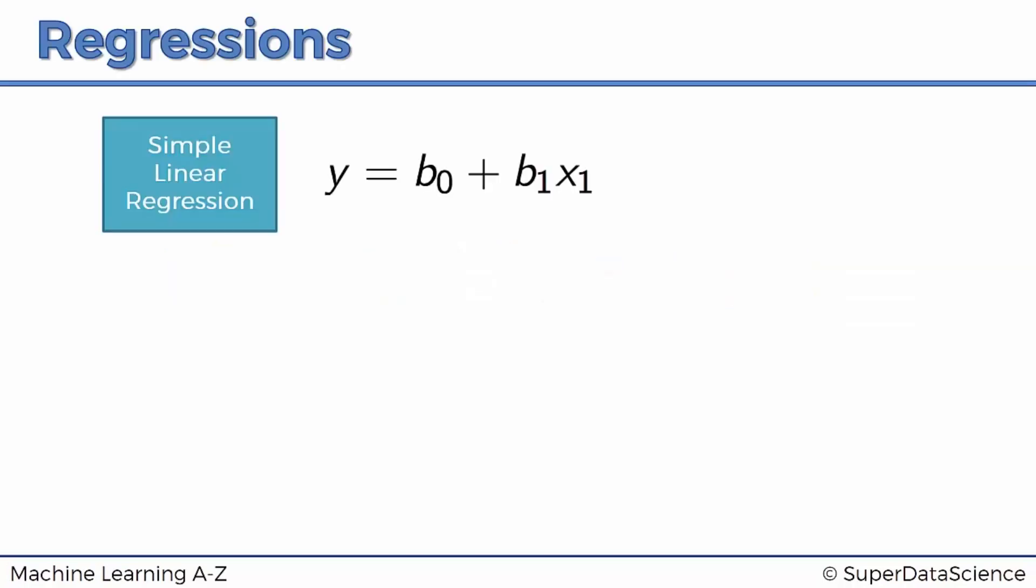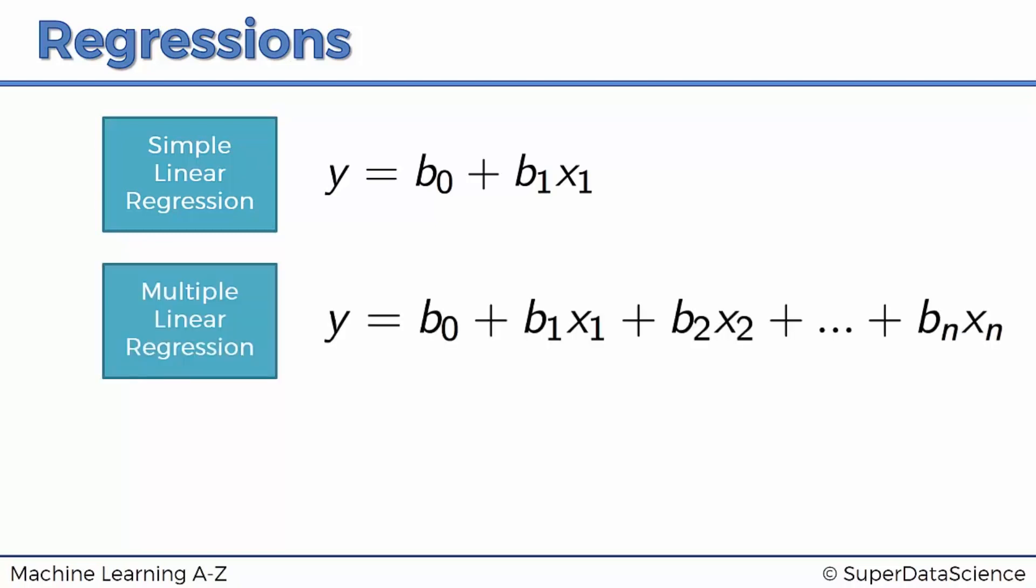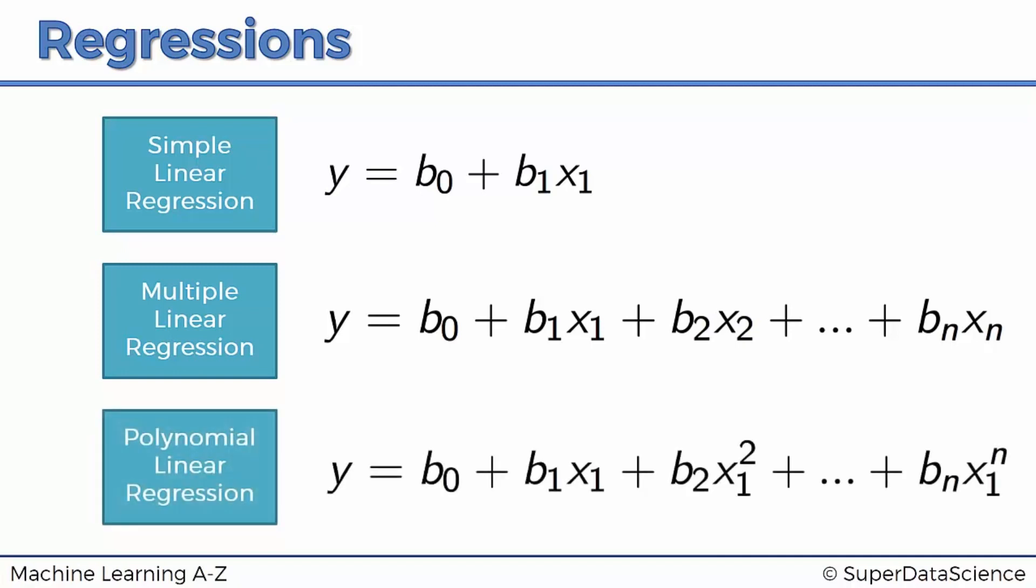We already know a couple of types of regressions. We know the simple linear regression, which we can see over here. Then we've also discussed the multiple linear regression, which is written out over here. And finally, we've got the polynomial linear regression, which is written out here.